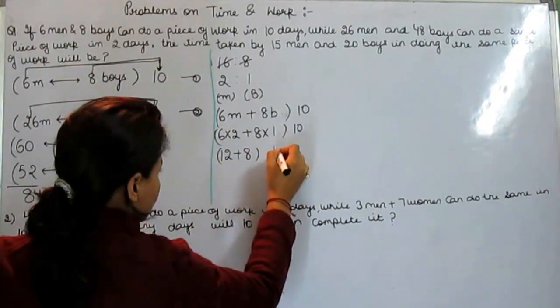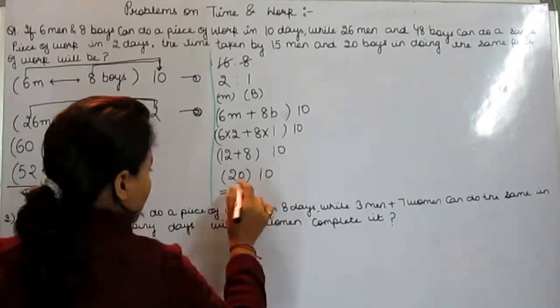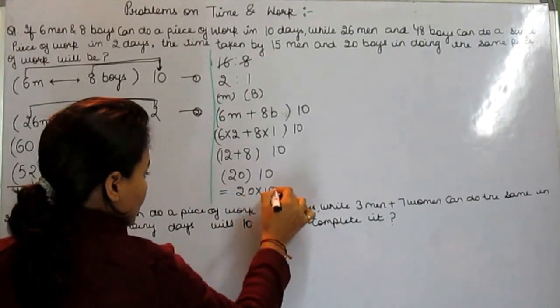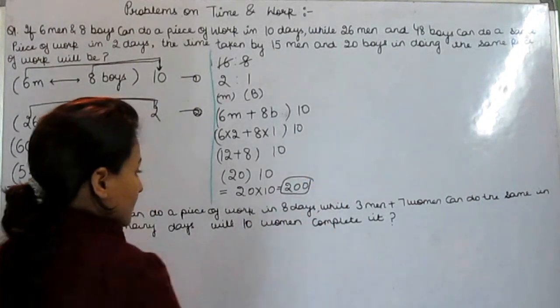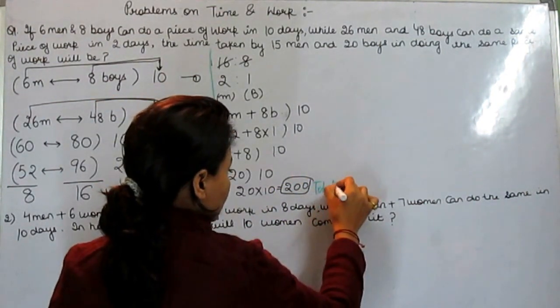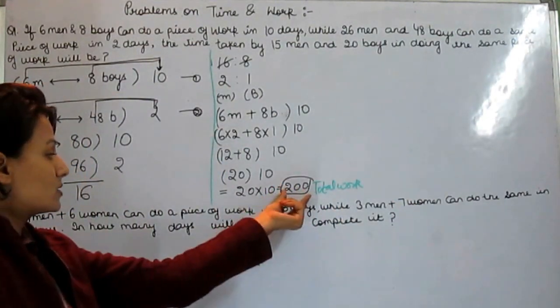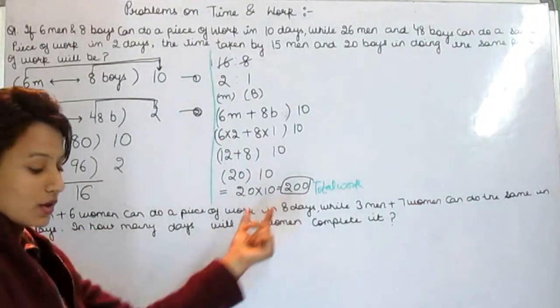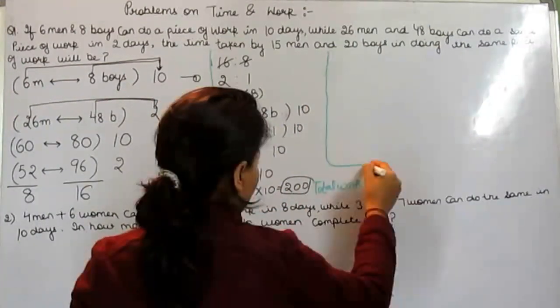This is 12, this is 8, this is 20. When we multiply 20 into 10, we get 200. And this 200 is total work.